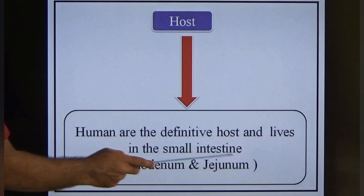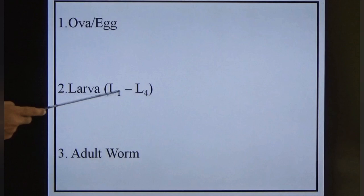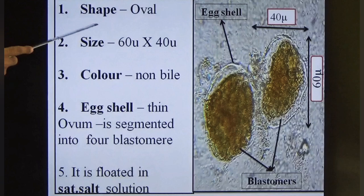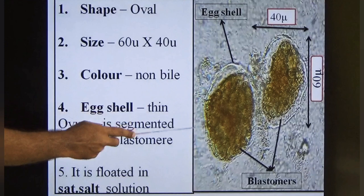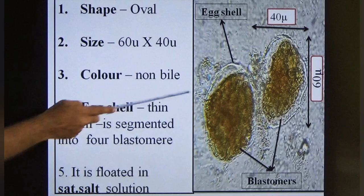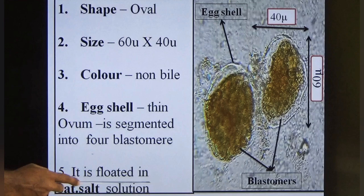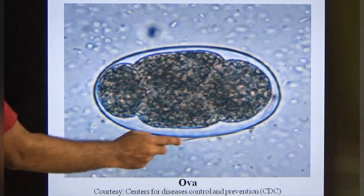Morphology: like all nematodes, there are three morphological forms — ova, larvae (L1 to L4), and adult worm (male and female). The ova are oval-shaped, 60 microns in length and 40 microns in breadth, non-bile stained, with a thin eggshell, and segmented into four blastomeres. They float in saturated salt solution. You can see the four blastomeres and the thin eggshell in the picture.